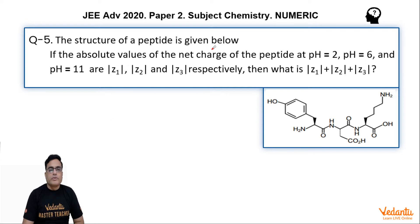The structure of a peptide is given below. If the absolute values of the net charge of the peptide at pH equal to 2, pH equal to 6, and pH equal to 11 are mod z1, mod z2, and mod z3 respectively, then what is the sum of mod z1 plus z2 plus z3? Mod means you don't have to consider the sign of the charge.